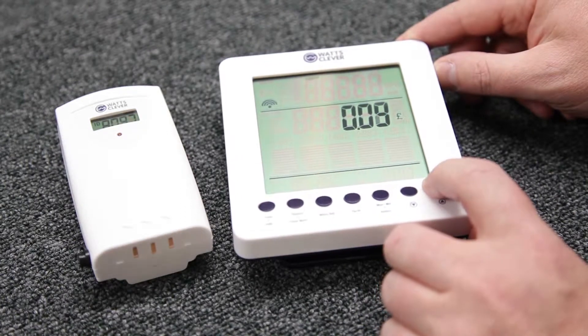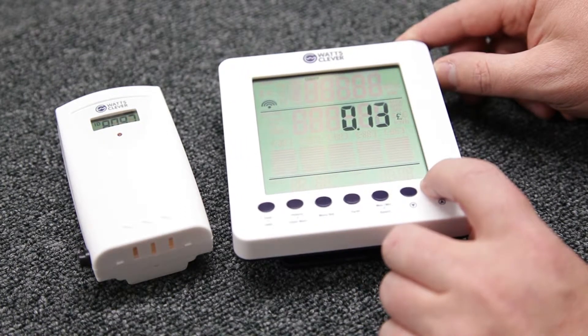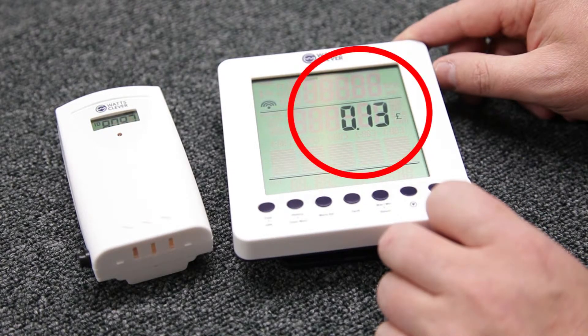The final part of the setup process is to input the cost per kilowatt of your system. You may need to refer to your utility bill for this cost.